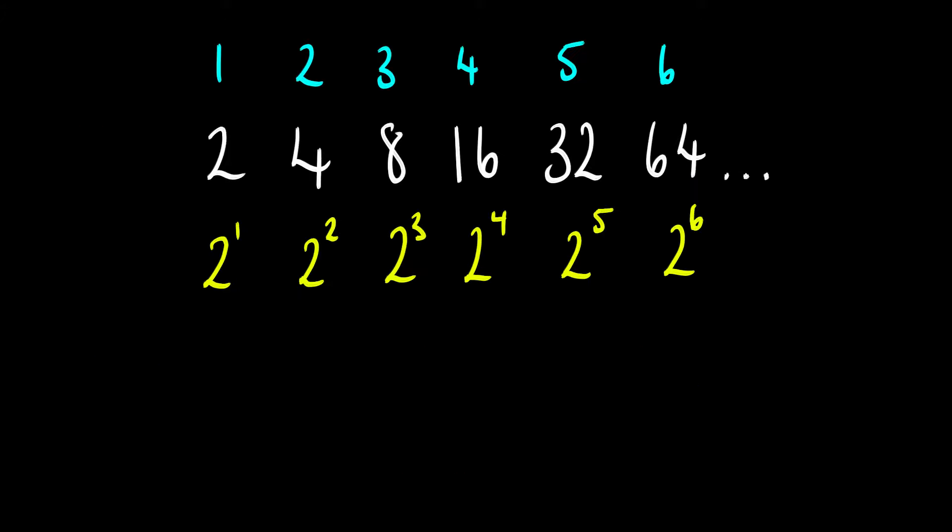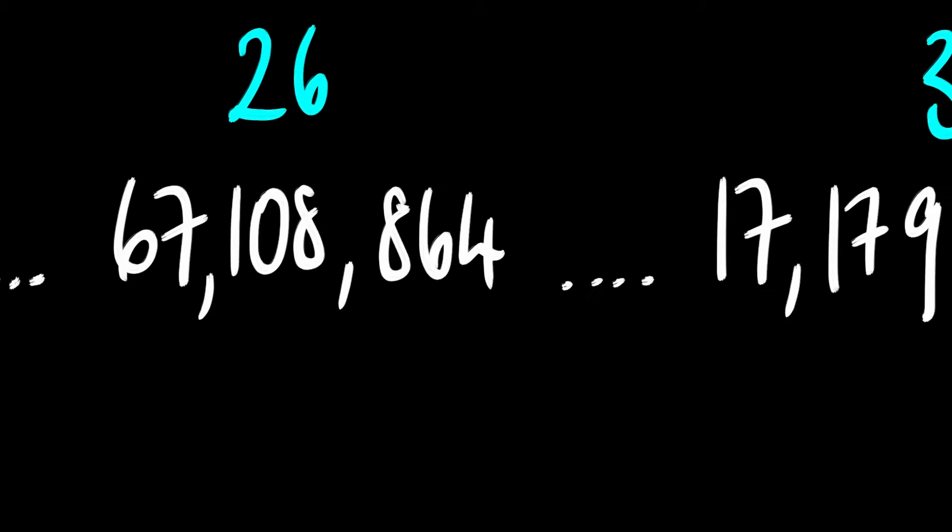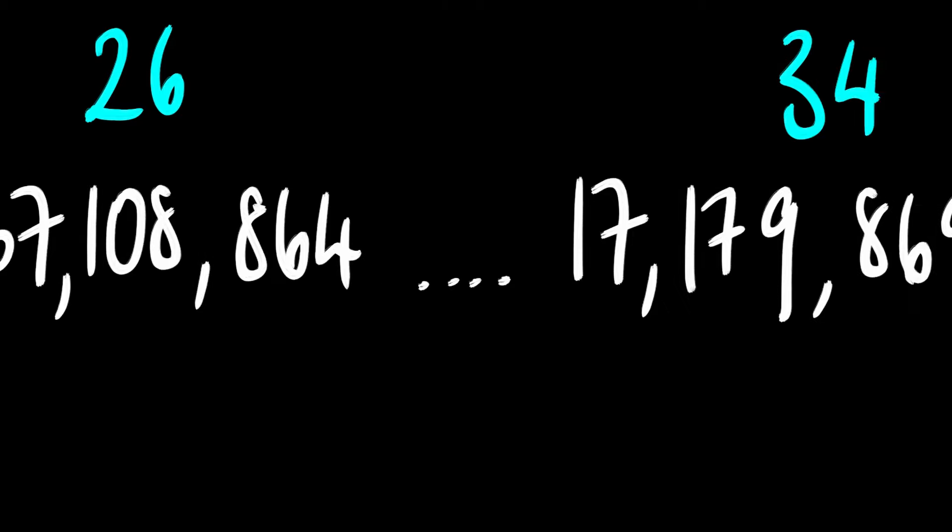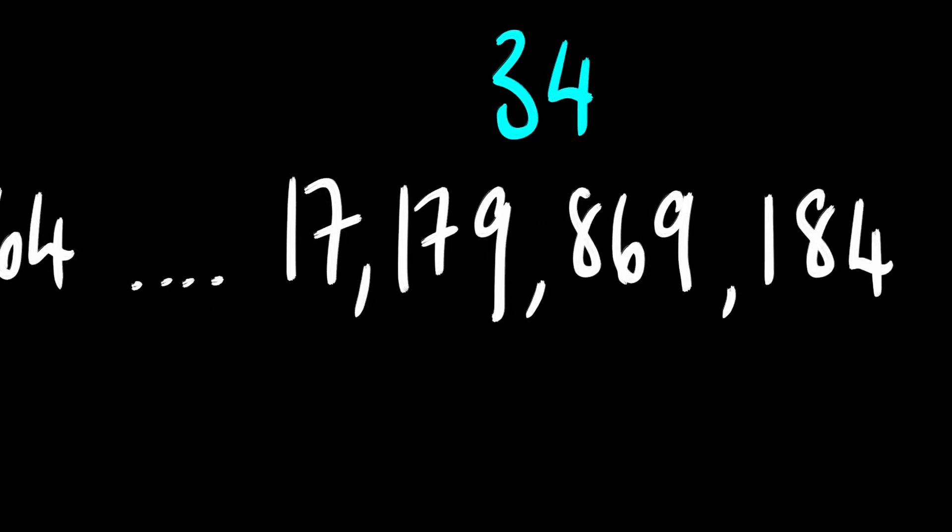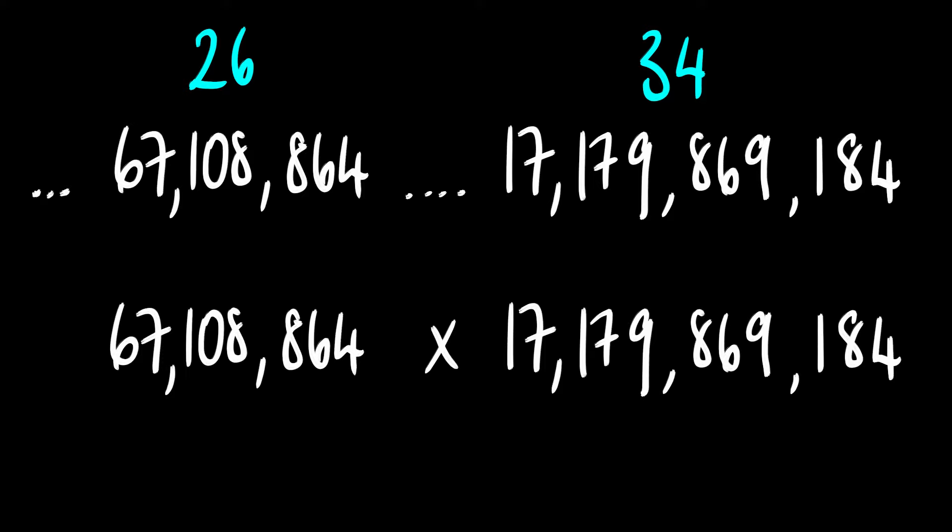And if we move along the sequence to far greater numbers, like 67,108,864 and 17,179,869,184, imagine trying to manually multiply these together. Yeah, I'm already thinking of ways to procrastinate. But if somebody had already worked out what their base 2 logarithm was, and we could then just add them together and see what that logarithm relates to in the sequence, well then, that would be brilliant. Now, that's great and all, but I hear you asking, what if I wanted to multiply numbers that weren't powers of 2? I mean, you don't ask for much, do you?